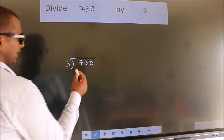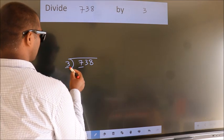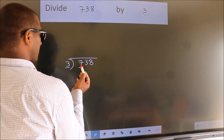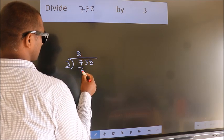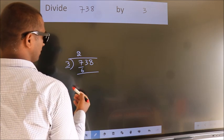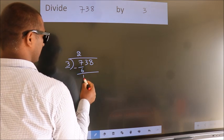Next. Here we have 7, here 3. A number close to 7 in the 3 table is 3 times 2, which is 6. Now we subtract and get 1.